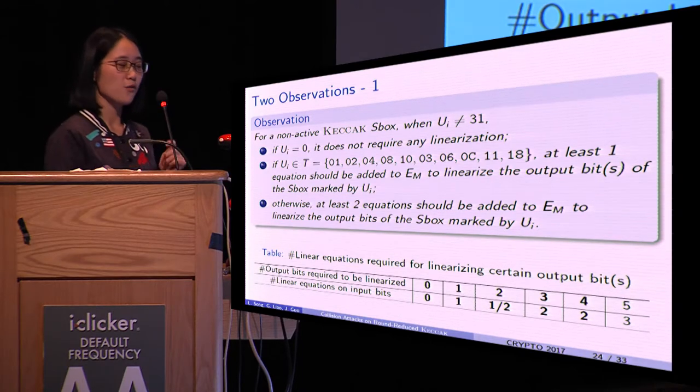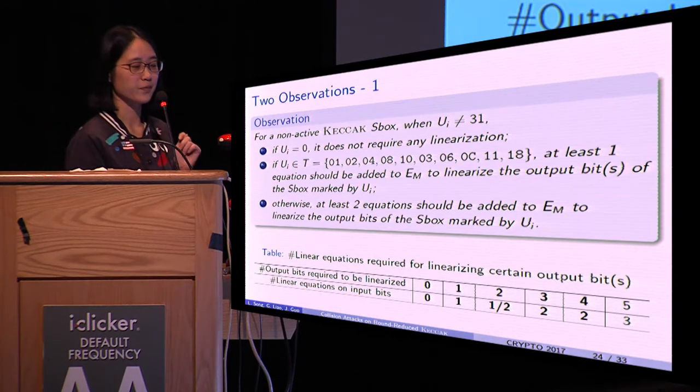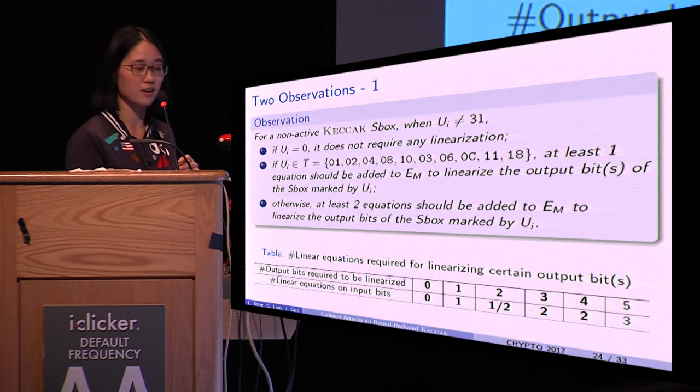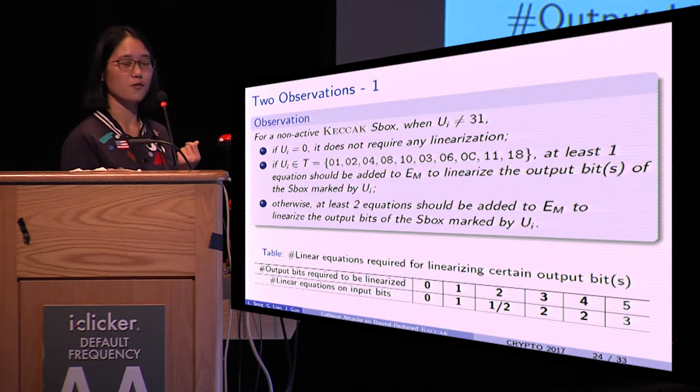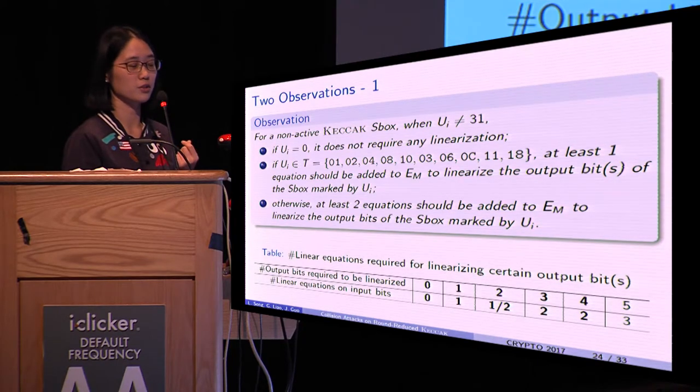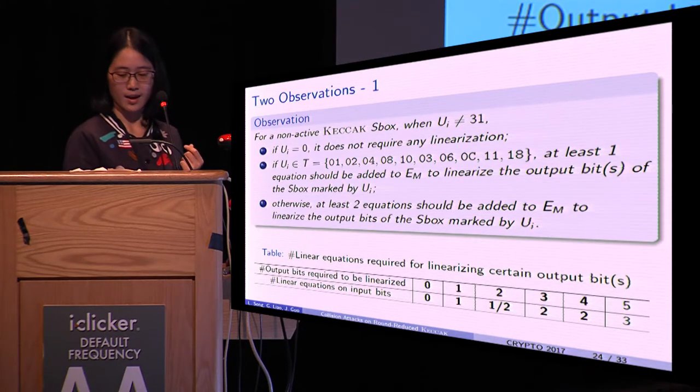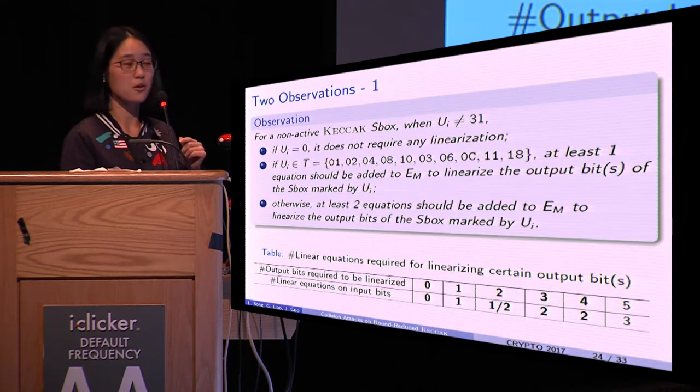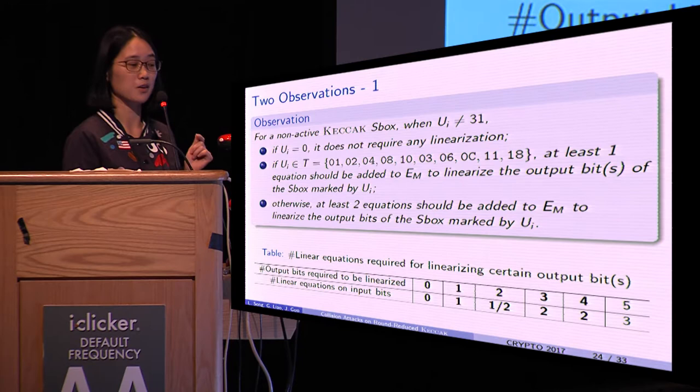We have two observations. Observation one: for non-active S-box, if U_i is zero, then it does not require any linearization. If U_i belongs to set T, then at least one equation should be added to Em.